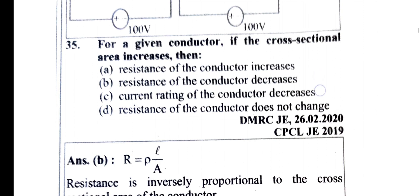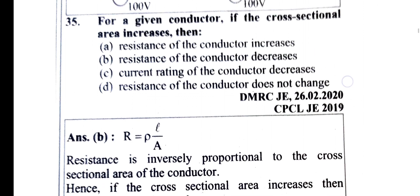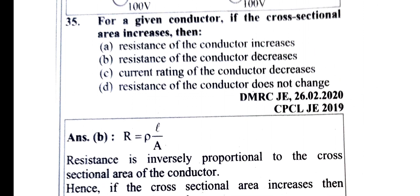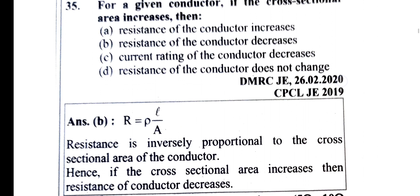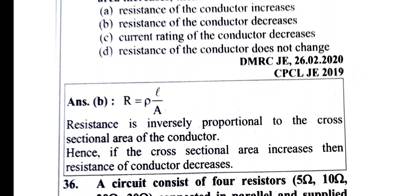For a given conductor, if the cross-sectional area is changed — resistance R equals ρL by A — the resistance of the conductor decreases. The resistance is inversely proportional to the cross-sectional area of the conductor.